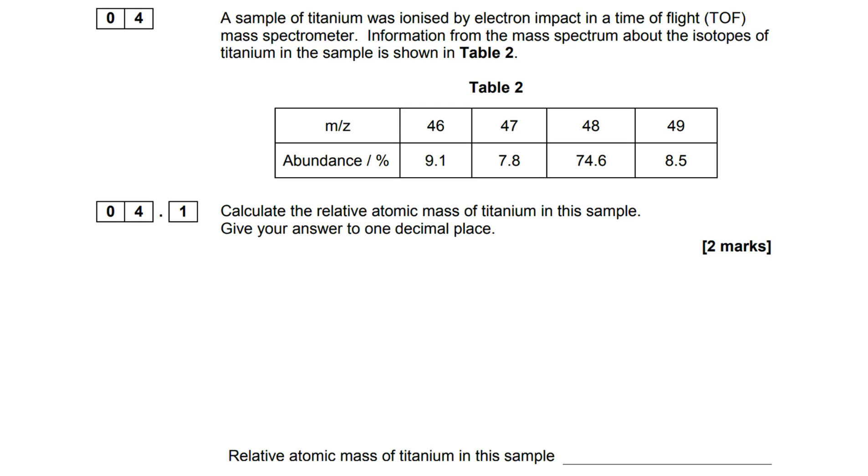This question starts as a relatively straightforward one where we are simply identifying the relative atomic mass based on the abundance of the different isotopes. We've got the four isotopes there: 46, 47, 48, and 49.